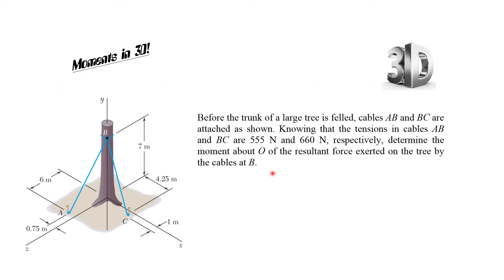Point B is where the cables are actually pulling on the tree — the force is applied here at B. The rotation is happening down at the ground. So force is applied up here, and rotation is happening at the ground.